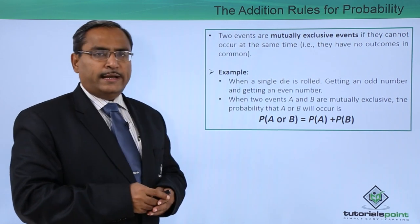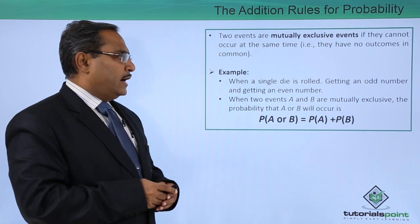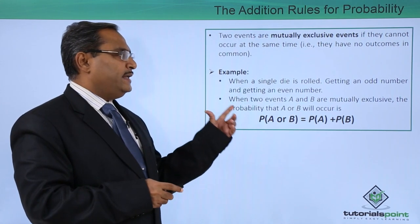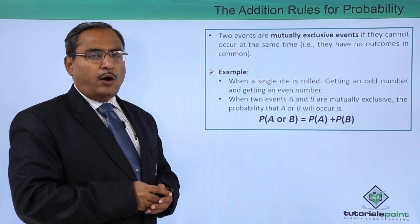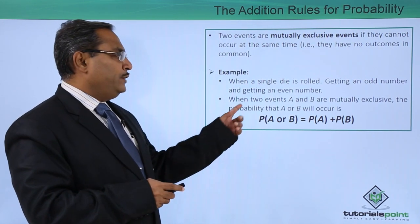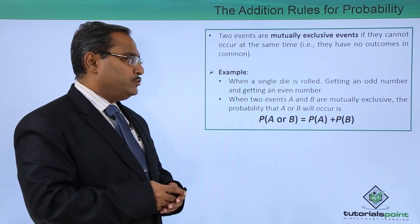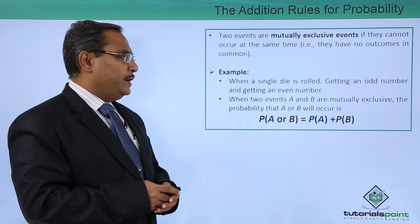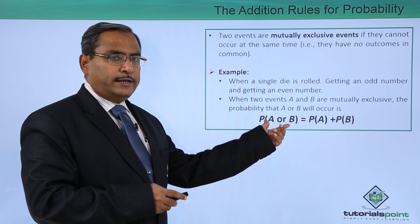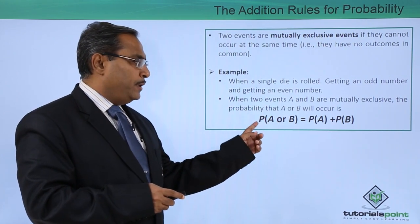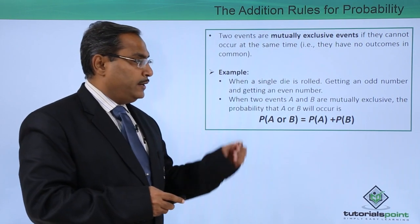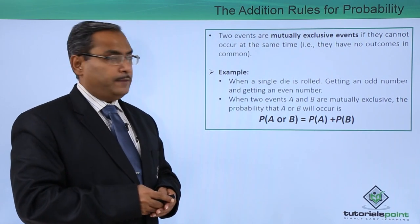Let us go for one example. A single die is rolled — getting an odd number and getting an even number in the outcome. They are obviously mutually exclusive. When two events A and B are mutually exclusive, the probability that A or B will occur is calculated as: probability of event A or event B is equal to probability of A plus probability of B.